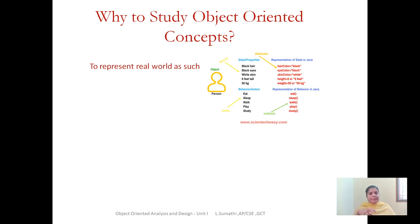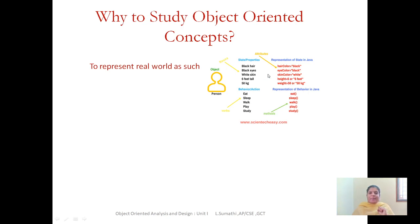I want to represent the real world entity 'person'. I am going to consider the person as an object. If you are asked to describe a person, you will describe them in terms of height, weight, skin color — you explain a person in terms of characteristics. These characteristics can be represented as attributes in your object-oriented concept. For example, attributes like hair color, eye color, skin color, height, and weight. For person X: hair color is black, eye color is black, height is 6 feet, weight is 50 kg. I am able to express the characteristics of the object as in the real world.